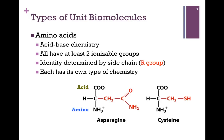The identity of each amino acid is determined by the chemical structure of its side chain, or R group, highlighted here in red. Each has its own unique type of chemistry based on the nature of the chemical groups present in that side chain. We'll learn more about amino acids and the polymers they form in Chapter 4.